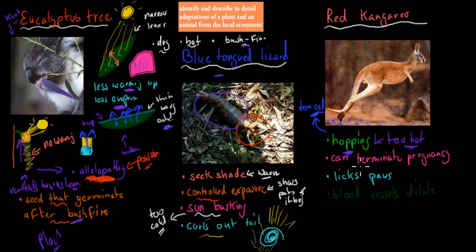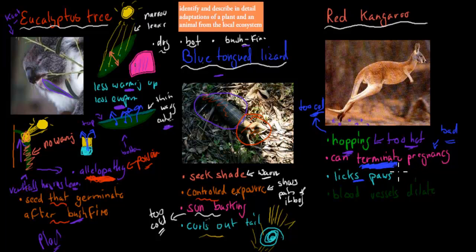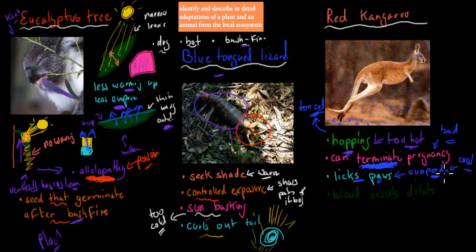Kangaroos can also terminate their pregnancy if conditions aren't right — for example, if it's too hot or there isn't enough food. They won't waste energy raising a young joey that would likely die in bad conditions. They can also lick their paws: the saliva evaporates from the paw, and that evaporation has a cooling effect — similar to how sweat cools us down.